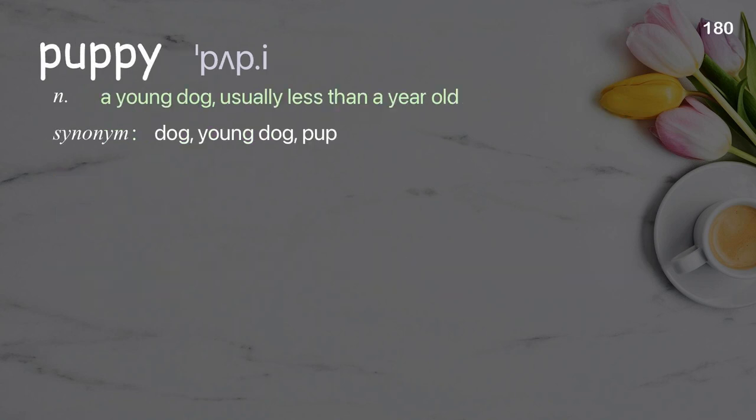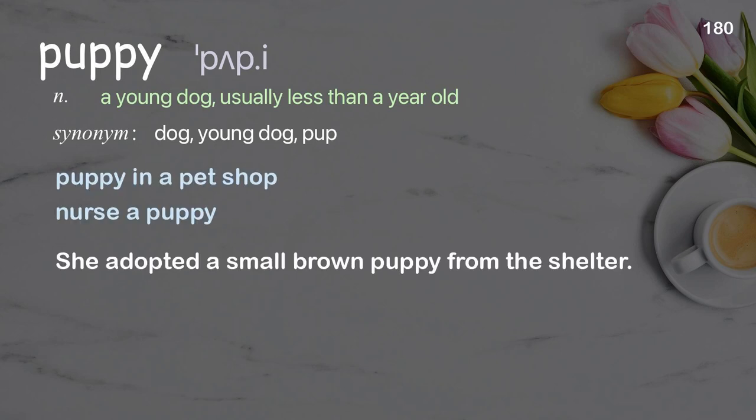Puppy: a young dog, usually less than a year old. Examples: puppy in a pet shop; nurse a puppy; she adopted a small brown puppy from the shelter.